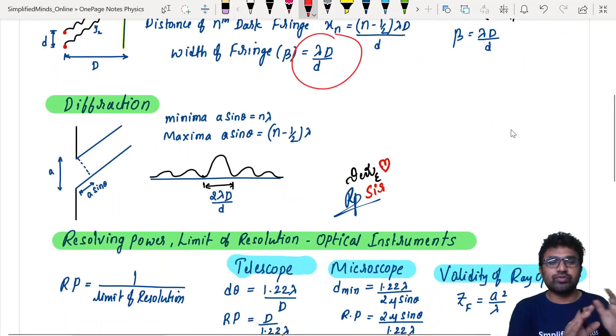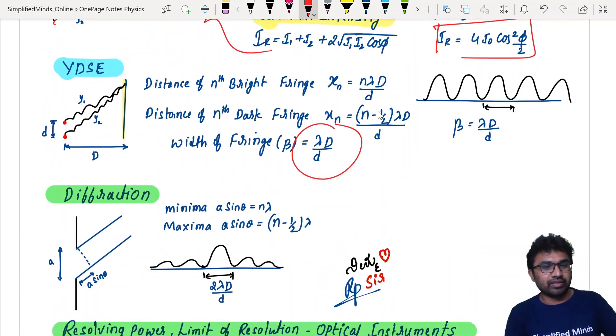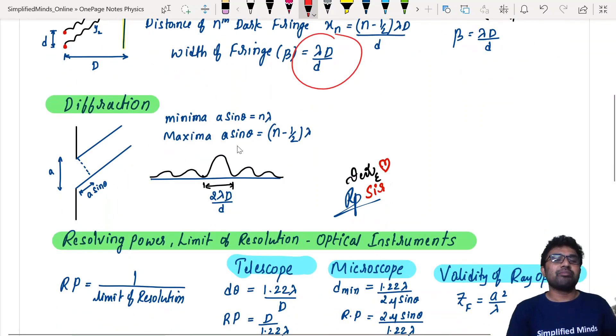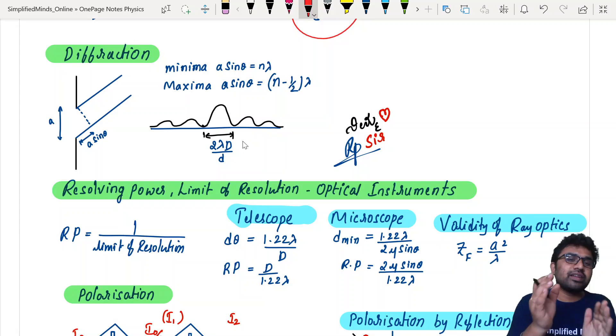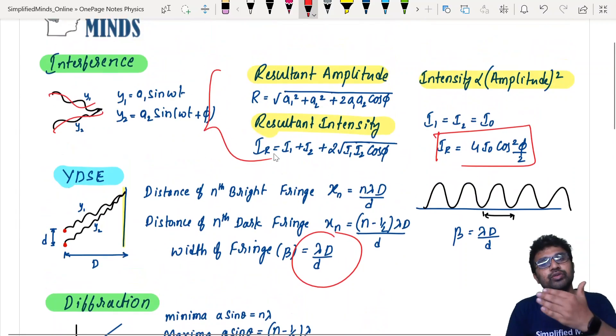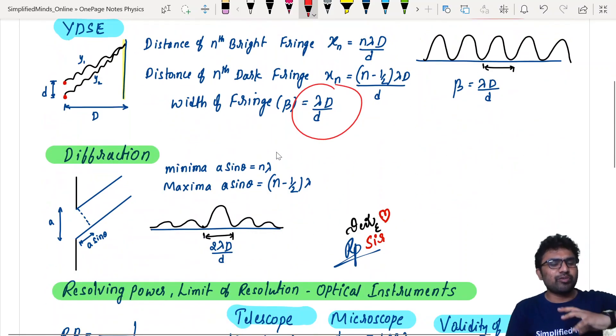Coming to diffraction, you should just know the formula for minimum and maximum. Here, the reverse is noted. For example, with interference, bright fringe is n lambda, but here minima is n lambda, maximum is n minus half lambda. Also, if you see the diffraction pattern, centrally you get twice the width, 2 lambda D by d, compared to the interference pattern. I'm trying very quickly.